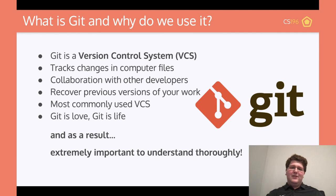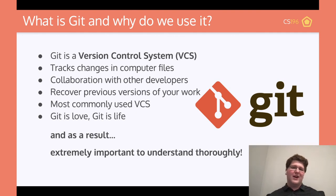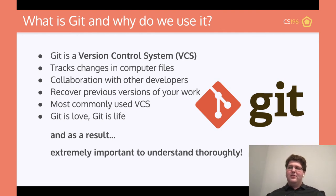Going back to Git: Git is a version control system, and what that means is that it tracks the changes in computer files. If I want to change a file — like in Google Docs, if you've seen the 'saving your changes' — that's basically Git, except you can roll back to the previous ones. It allows for collaboration with developers, so instead of passing around flash drives or uploading to Google Drive, it's all in one place. And Git is the most commonly used version control system.